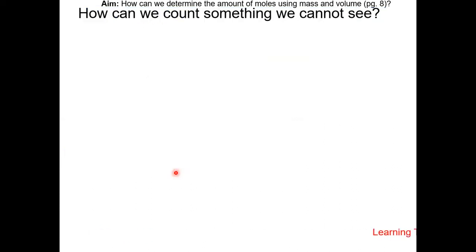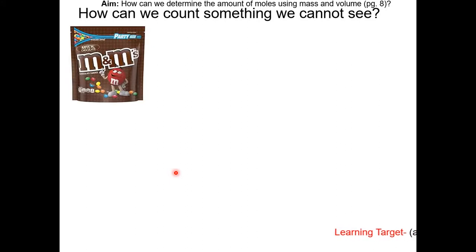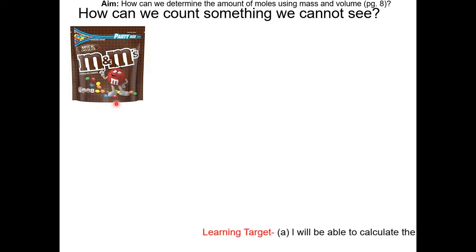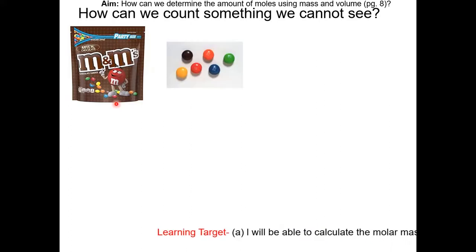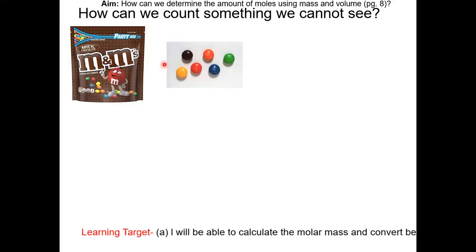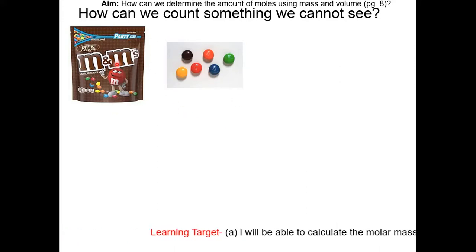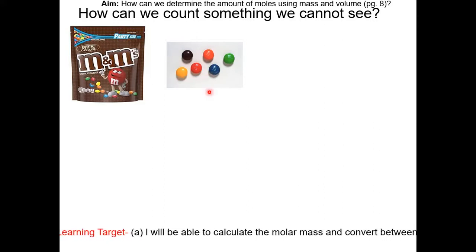How can we count something we cannot see? Let's say we have a bag of M&Ms and we want to count the number of M&Ms inside the bag without touching it. If we know the mass of each individual M&M, and we measure the total mass of the bag, we can figure out how many M&Ms are in the bag without ever opening it.